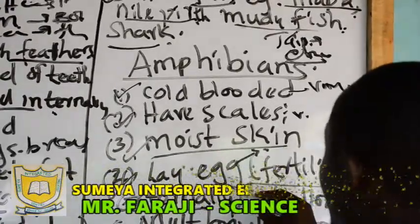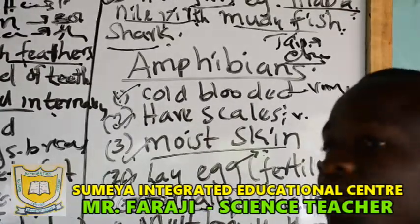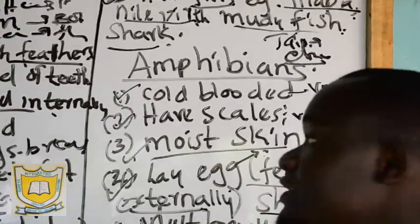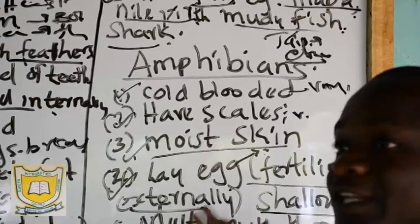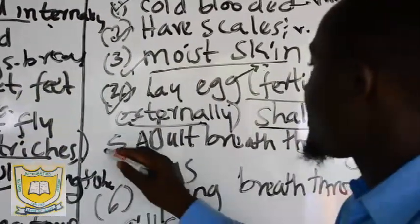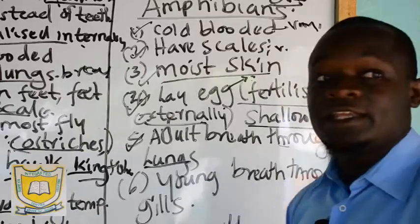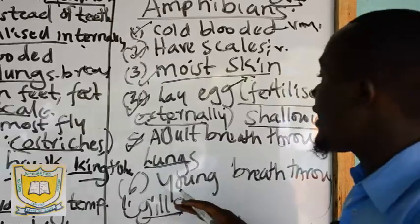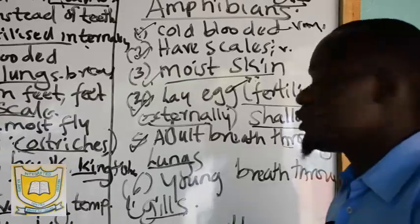The environment that is very important for fertilization of amphibians is water — specifically shallow waters. When you find shallow water, you may find a lot of rocks, because that area is a good environment for fertilization of those eggs and for reproduction of amphibians. Number five: adult amphibians breathe through lungs, while when they are still young, they breathe through gills.